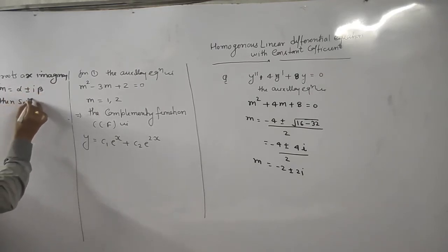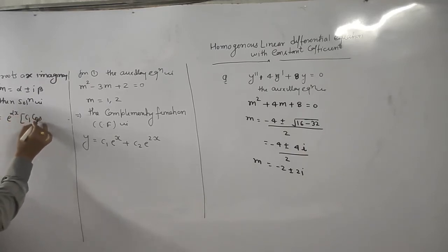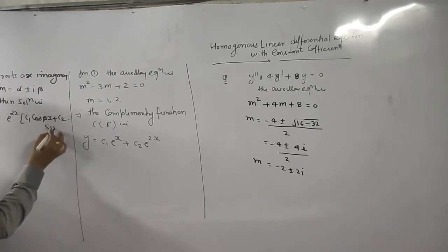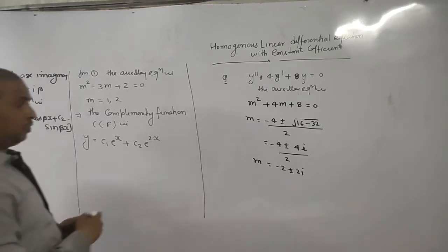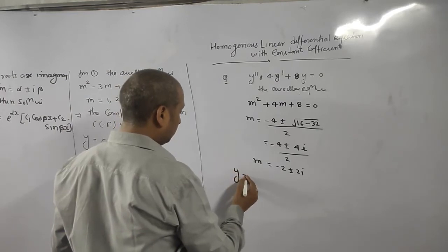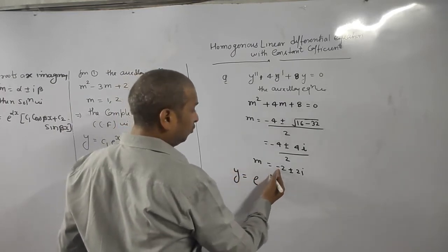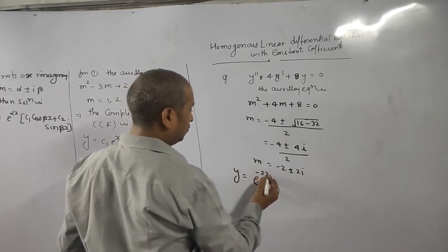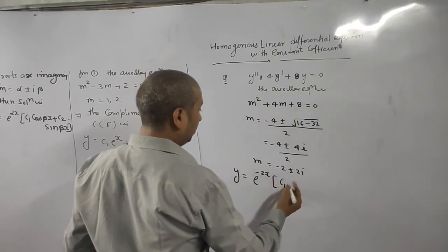when roots are alpha plus minus i beta, then solution is e to the power alpha x times (c1 cos beta x plus c2 sin beta x). Just your work is to put alpha and beta value here. So what is the solution here? What is alpha value? Minus 2. What is beta value? 2.